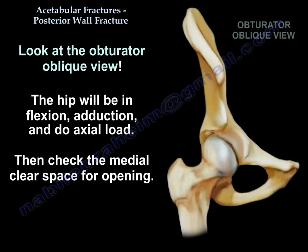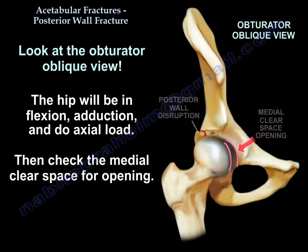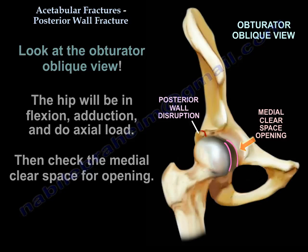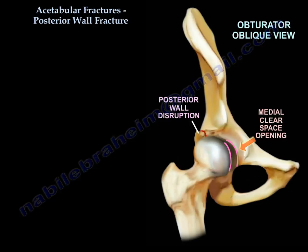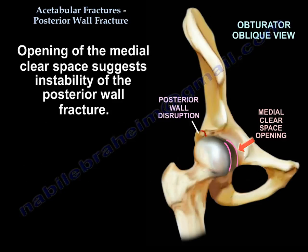You are going to look at the obturator oblique view. The hip will be in flexion and adduction, then apply axial load and check the medial clear space for opening. Opening of the medial clear space suggests instability of the posterior wall fracture.